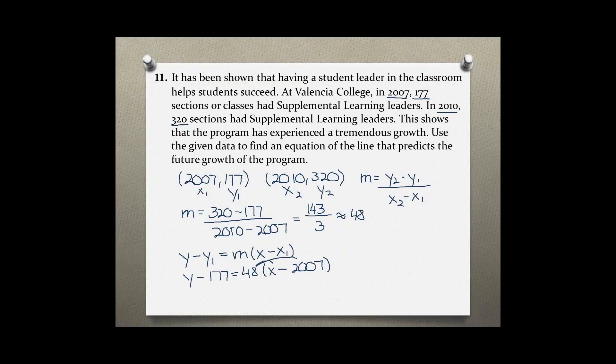Using distributive property to eliminate the parentheses, we have y minus 177 equals 48x minus 96,336. Last step, add 177 to both sides. And you will get y equals 48x minus 96,159.